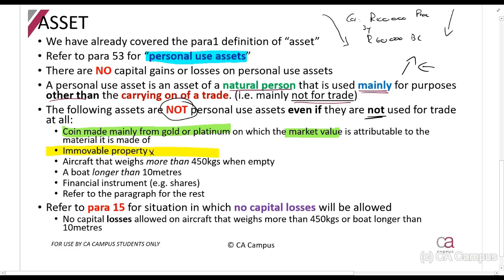Probably the most important one: immovable property. If you sell a house, there will be CGT on it. Also, aircraft that weighs more than 450 kg empty, and a boat longer than 10 meters — if you sell those assets there will be CGT. The reason is probably that these assets are typically owned by wealthier people, so it's essentially a tax on wealth. Financial instruments like shares also fall into this category.